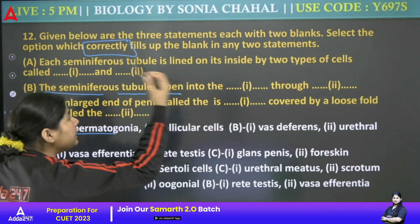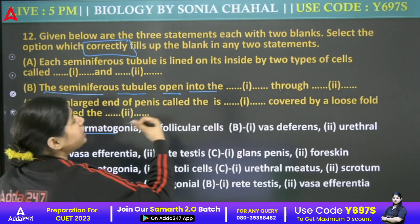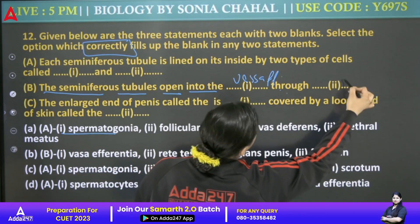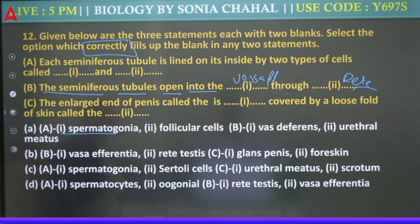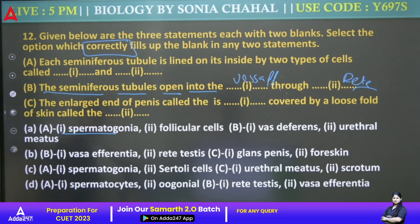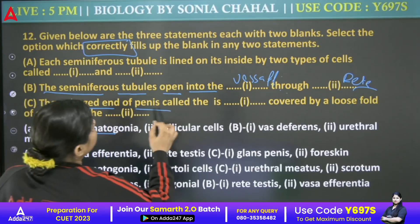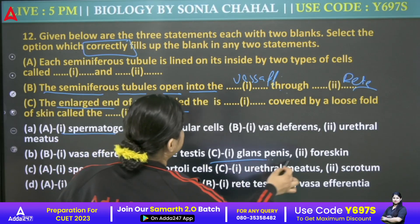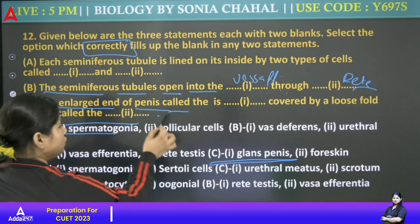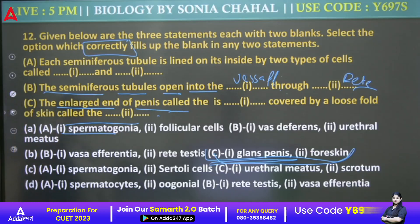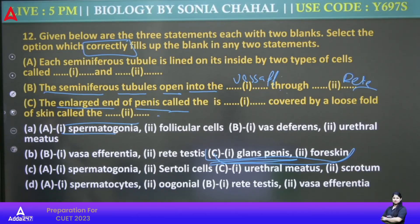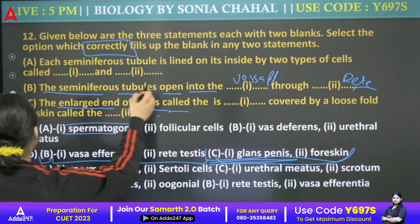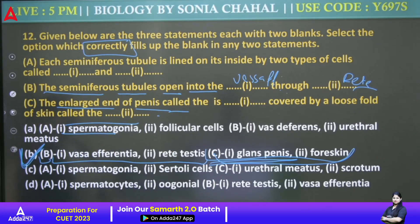Seminiferous tubule opens into what — vasa efferentia through rete testis. The enlarged end of penis is called glans penis, and covered by a loose fold called prepuce. The third statement is correctly written. B is correct — B says vasa efferentia and rete testis, which is correct. The B statement is our correct one; the rest are all incorrectly written. Our answer has options A and B — the answer is B.